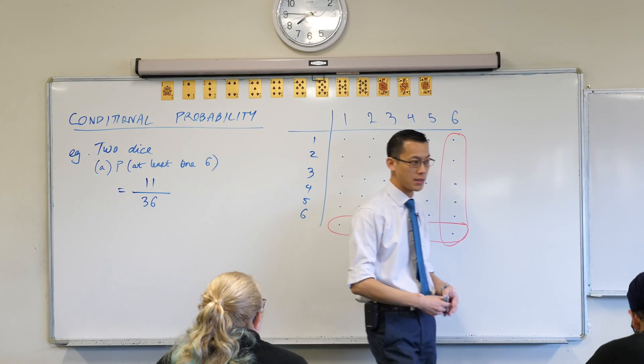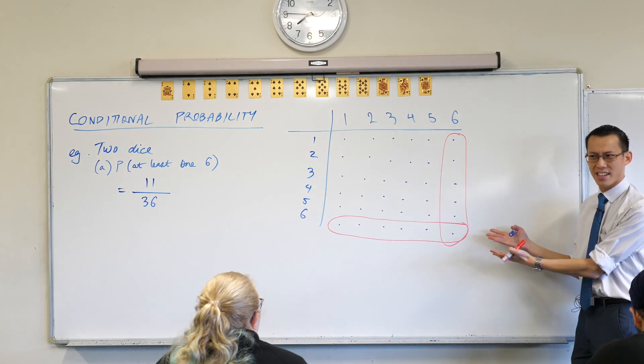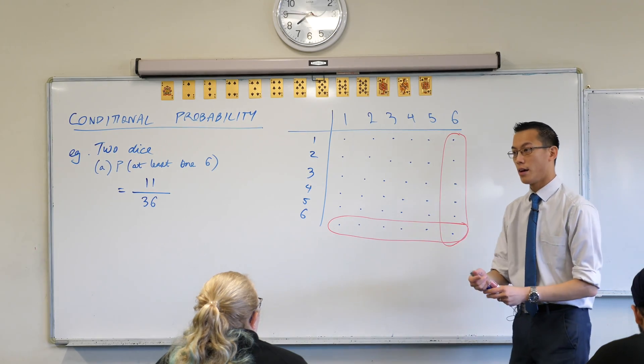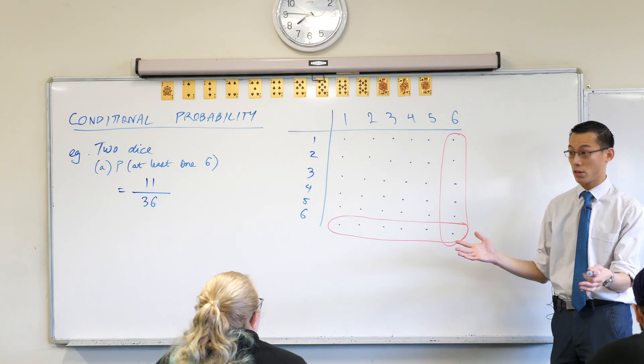There are 11. And famously, it's not 12 because you don't count this event twice, even though I've circled it twice, one from the row and one from the column. It's one event. There's only a single way to roll two sixes, so I only count it once.